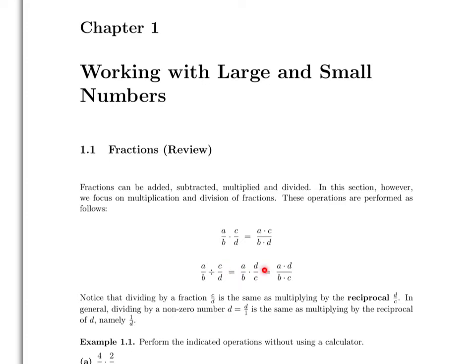Once we have the division written in terms of multiplication, we can use what we know about multiplying fractions to multiply these two fractions — we multiply the numerators and multiply the denominators. To recap, dividing by a fraction c over d is the same as multiplying by the reciprocal d over c. In general, dividing by a non-zero number d, which we could write as d over 1, is the same as multiplying by the reciprocal of d, namely 1 over d.